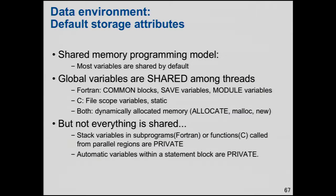In OpenMP's shared memory programming model, for the most part variables are shared. If you declare them before the parallel region, they're pretty much shared; if you declare them inside, they're not. Global variables are shared — in Fortran that includes common blocks, save variables, and module variables. File-scope variables declared static are shared. Dynamically allocated memory (malloc, new) is shared. A crude rule of thumb: if the variable is in the heap all threads can see, it's shared; if it's in the thread stack, it's private.